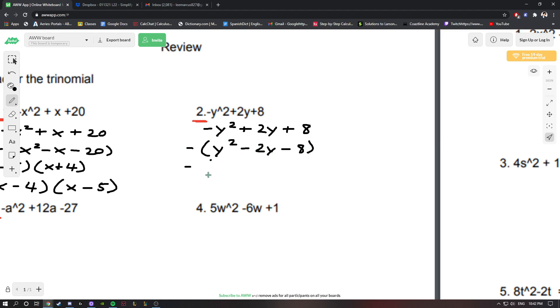Keep this negative on the outside. This is going to factor to (y - 4)(y + 2). If we want to distribute the negative again, we could get -(y - 2)(y - 4).